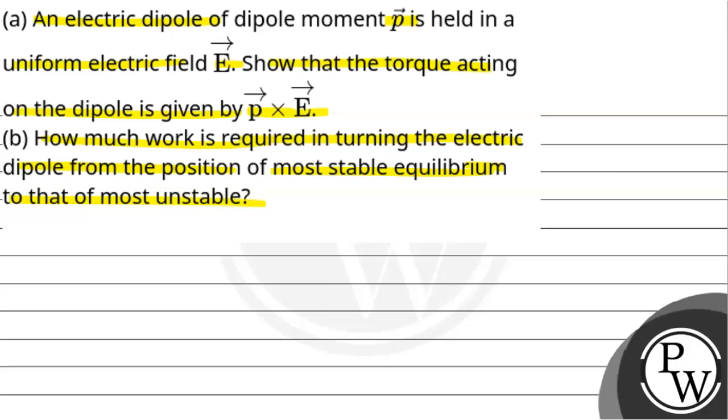We will show that the torque will be p cross E. Then in part B, we will calculate work done while turning this electric dipole from a stable equilibrium position to an unstable equilibrium position. Let's start with the solution. But before that, let's talk about the key concept. In general, the torque formula is given by torque vector equals force vector multiplied by the radial vector, and here we use the perpendicular distance.